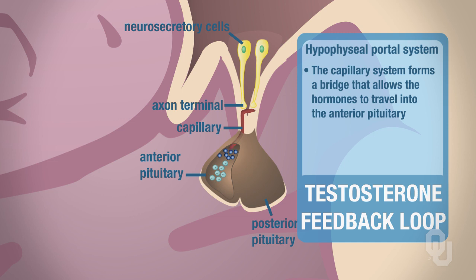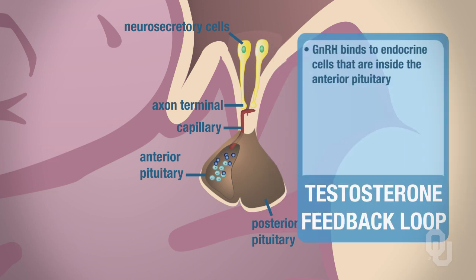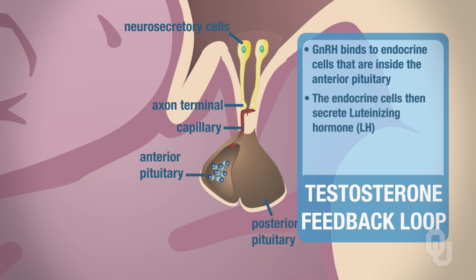Now gonadotropin-releasing hormone has reached the anterior pituitary. Once there, it will stimulate by binding to receptors on the endocrine cells located within the anterior pituitary. The hormone synthesized and secreted by these endocrine cells in this loop is called luteinizing hormone, abbreviated LH. You should know both the abbreviations and the full names for all of the hormones we will be discussing.